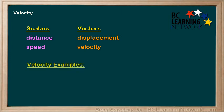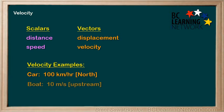Example velocities might be a car traveling at 100 kilometers per hour north, or a boat traveling at 10 meters per second upstream, or a glacier receding at negative 12 centimeters per year, where we understand the direction indicated by that negative sign.